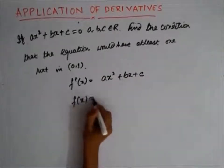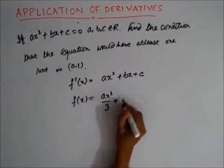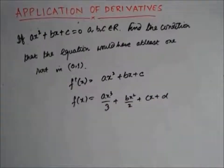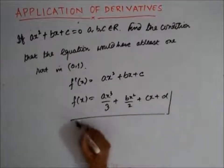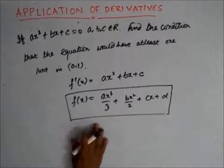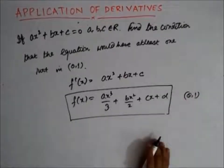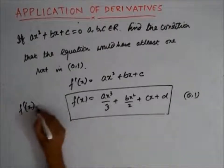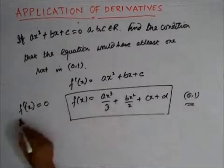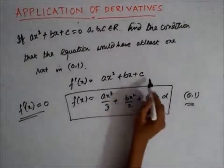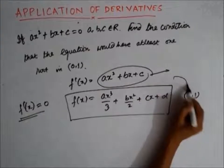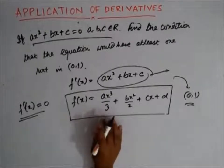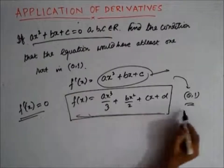That means what is φ(x)? My φ(x) can be found by integrating φ'(x). If this function satisfies Rolle's theorem in [0, 1], that means φ'(x) has to be zero somewhere in this interval. And if φ'(x) is zero in this interval, that gives us the root we need to find. So my task is to ensure that φ(x) satisfies Rolle's theorem.